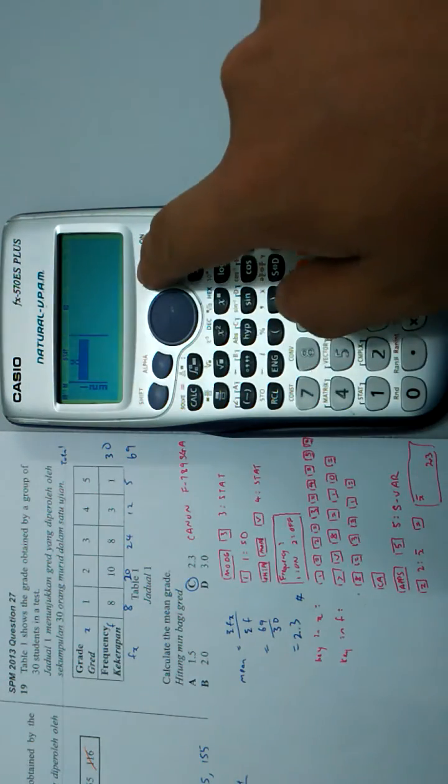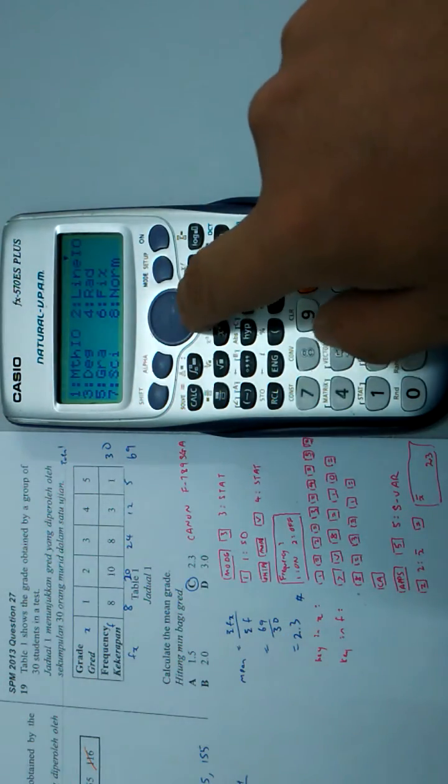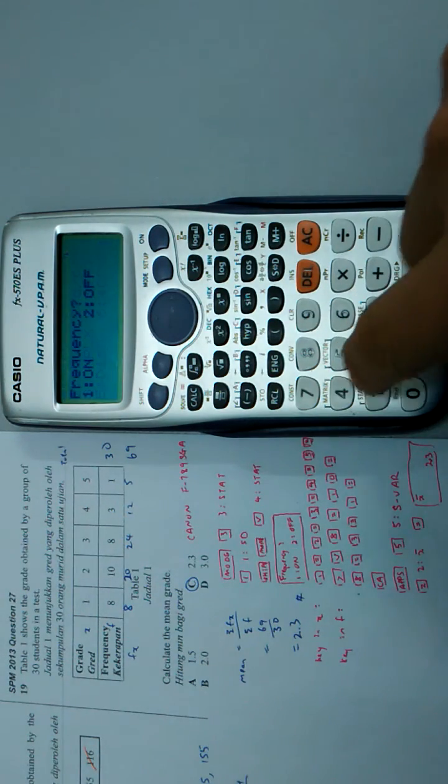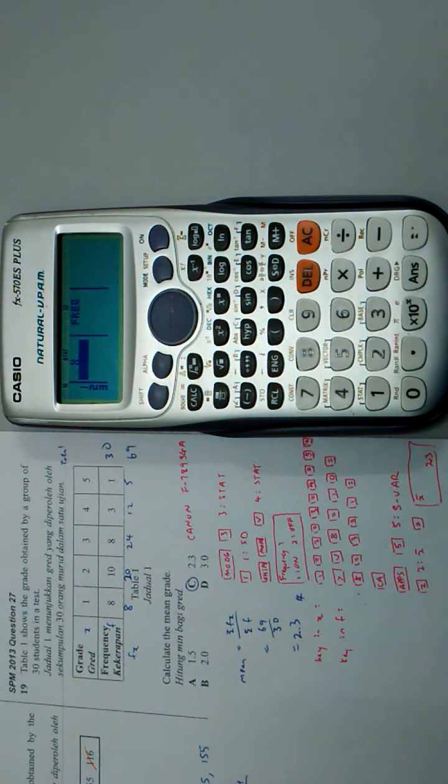I press Shift Mode, then go down to option 4 for Statistics Frequency On, so I can now key in the X values and their frequencies.